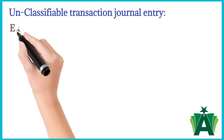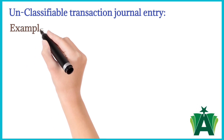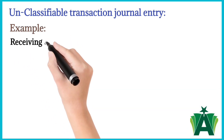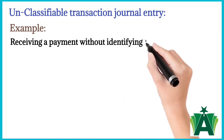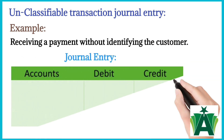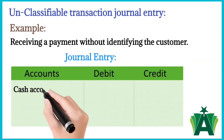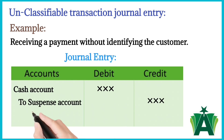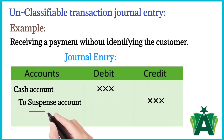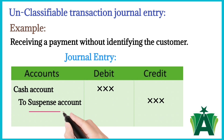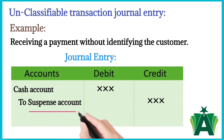Here is an example of an unclassifiable transaction journal entry: receiving a payment without identifying the customer. The journal entry will be: cash account debit, to suspense account credit. When you encounter a transaction whose nature or destination is unknown, you record it in the suspense account.